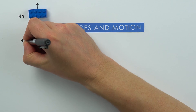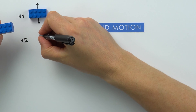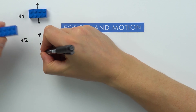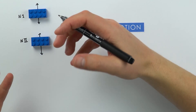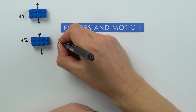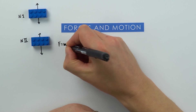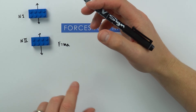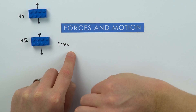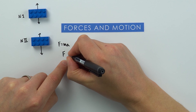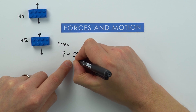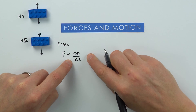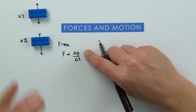Newton's second law again considers forces on one object, but here the forces are unbalanced, meaning there's a resultant force. At GCSE we often say Newton's second law is F equals MA, but that's only applicable if we have a constant mass and uniform acceleration. A better statement at A-level is that force is proportional to the rate of change of momentum. If there's a resultant force acting on something, it's going to accelerate.